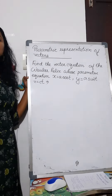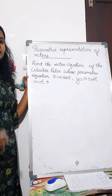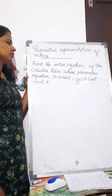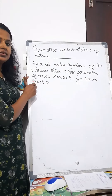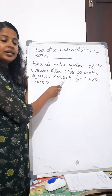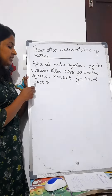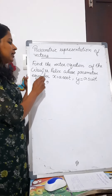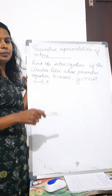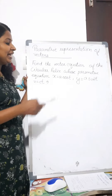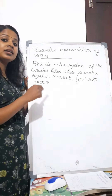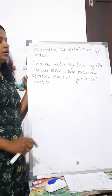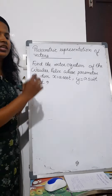Parametric representation of vectors. Question: Find the vector equation of the circular helix whose parametric equations are x equal to a cos t, y equal to a sin t, z equal to c t. Here the parametric equations are given. Parametric equations means x, y, and z are represented in terms of t — this is known as a parametric equation. So here, find the vector equation.